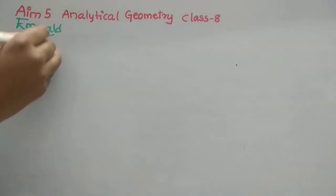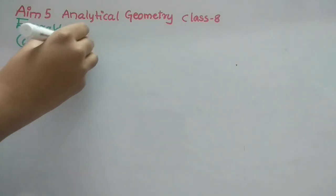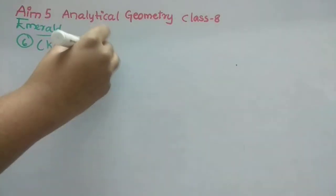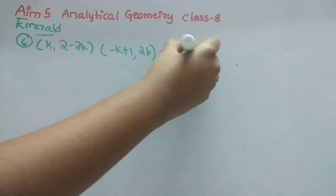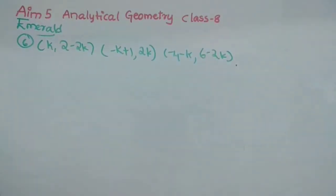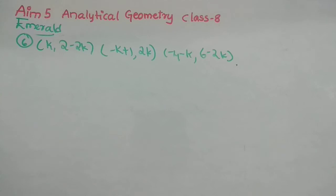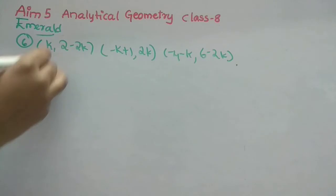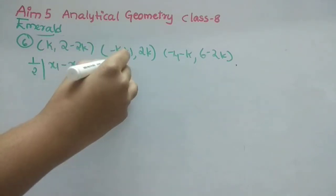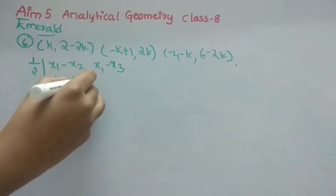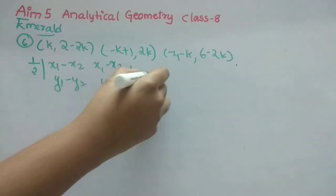Sixth question: points K(k, 2−2k), (−k+1, 2k), and (−k, 6−2k) are given as collinear. Since the points are collinear, the area of the triangle equals zero. We apply the area formula set equal to zero and substitute the coordinates.